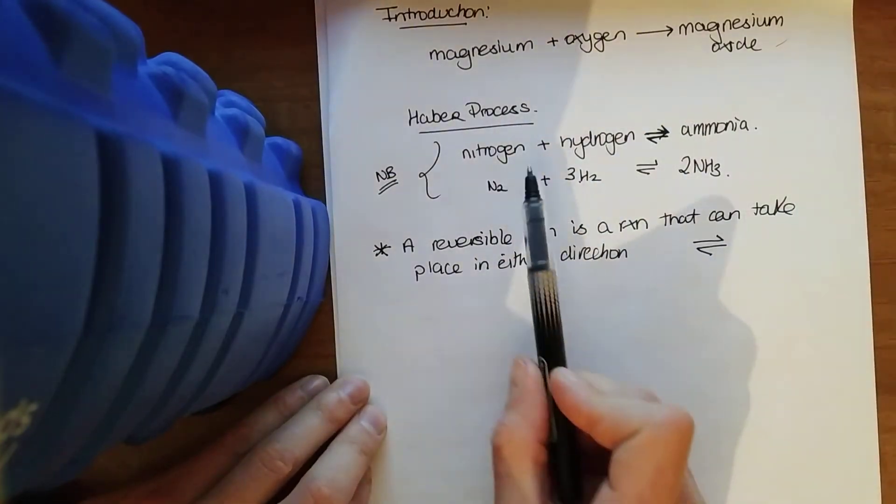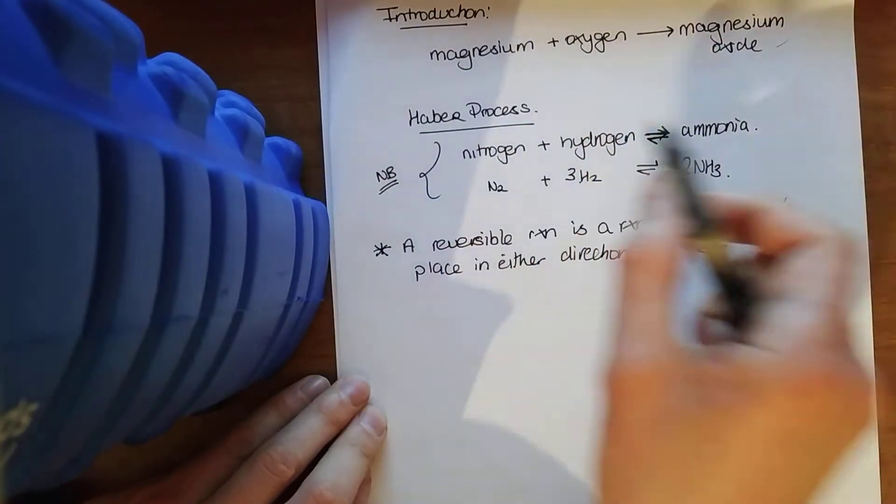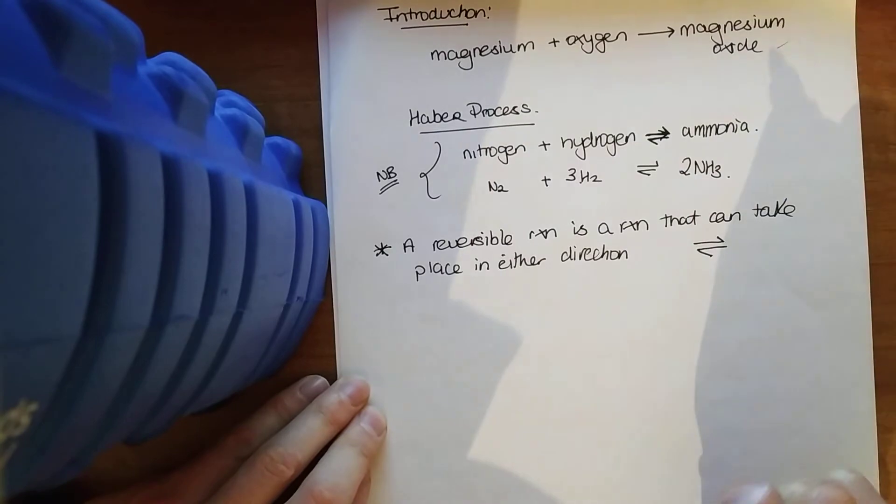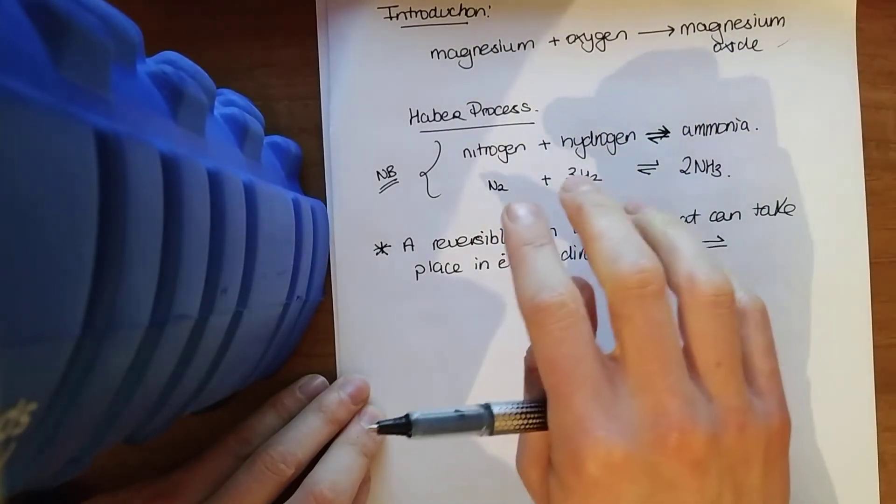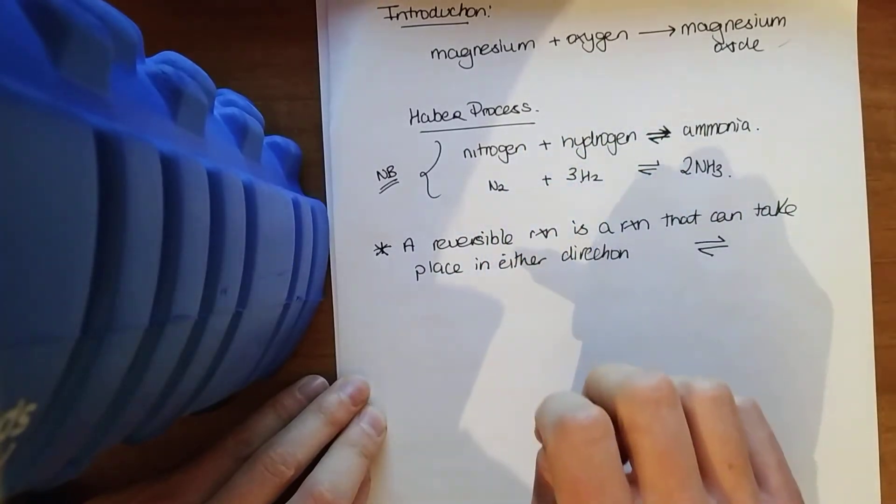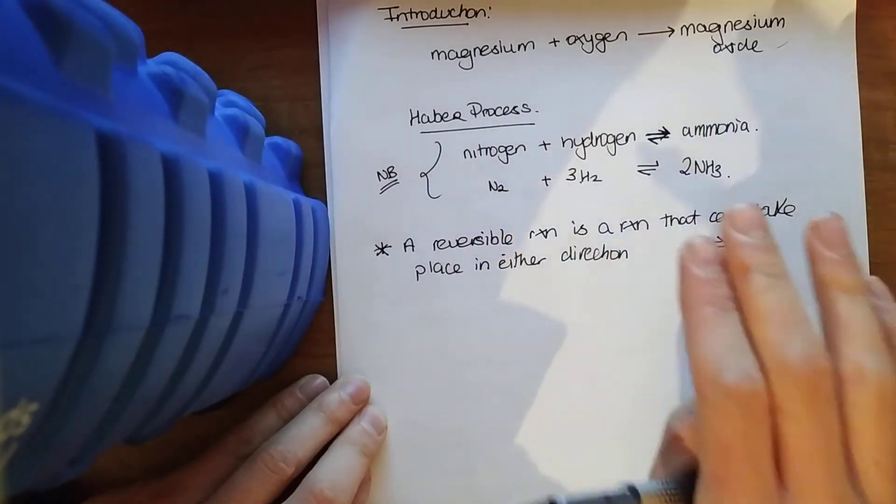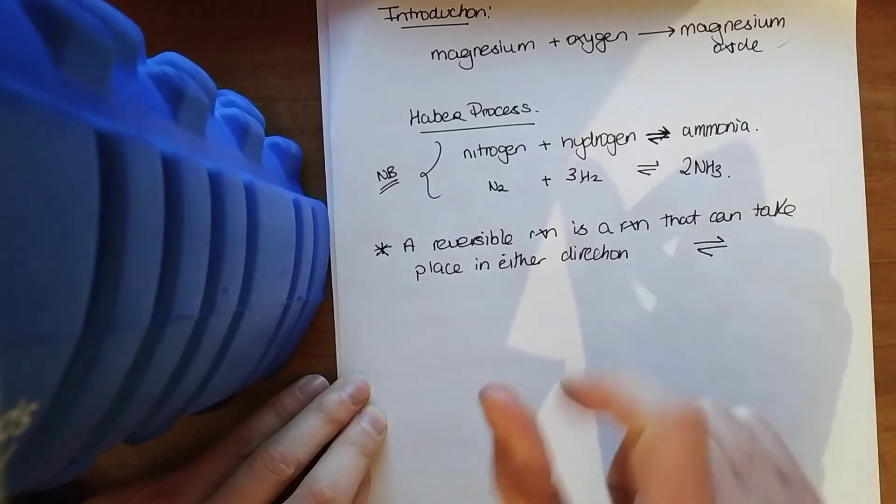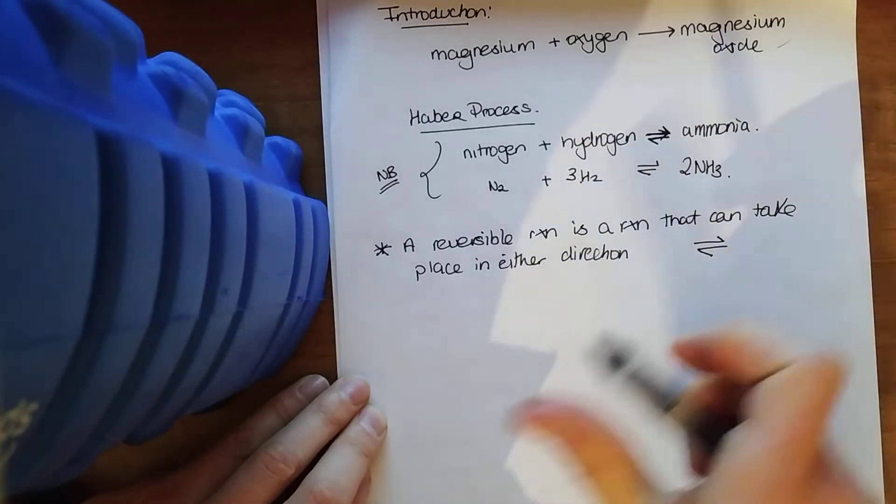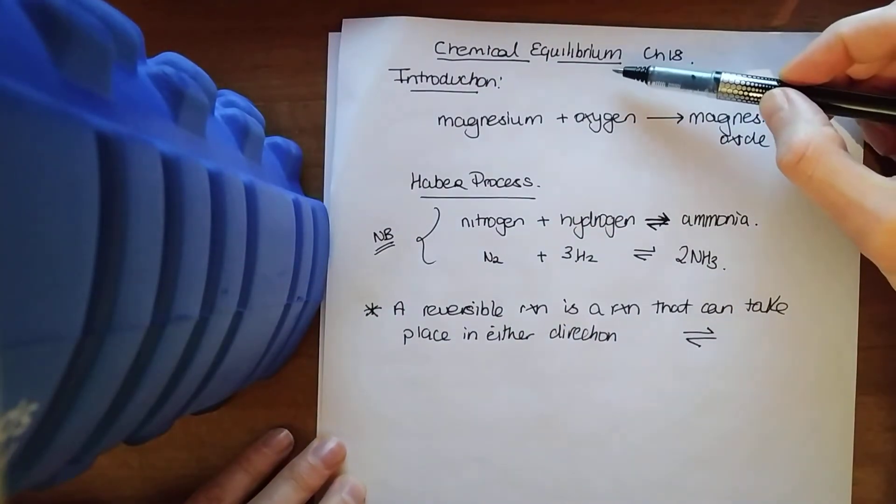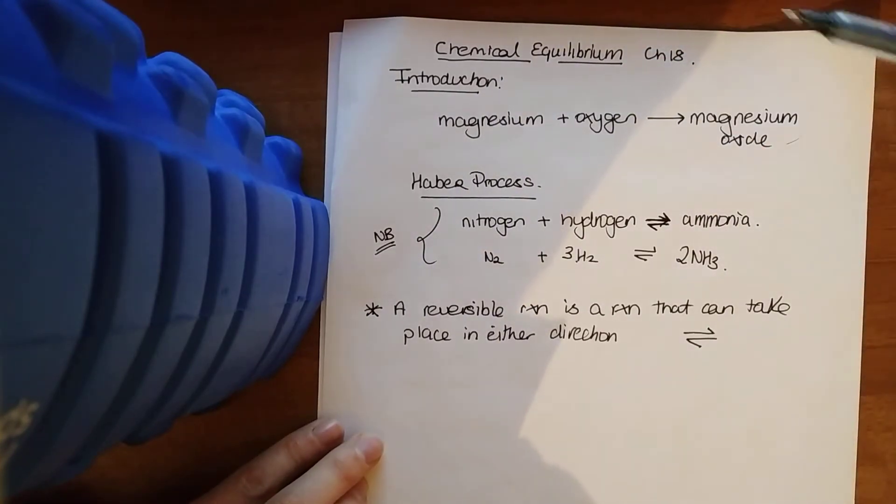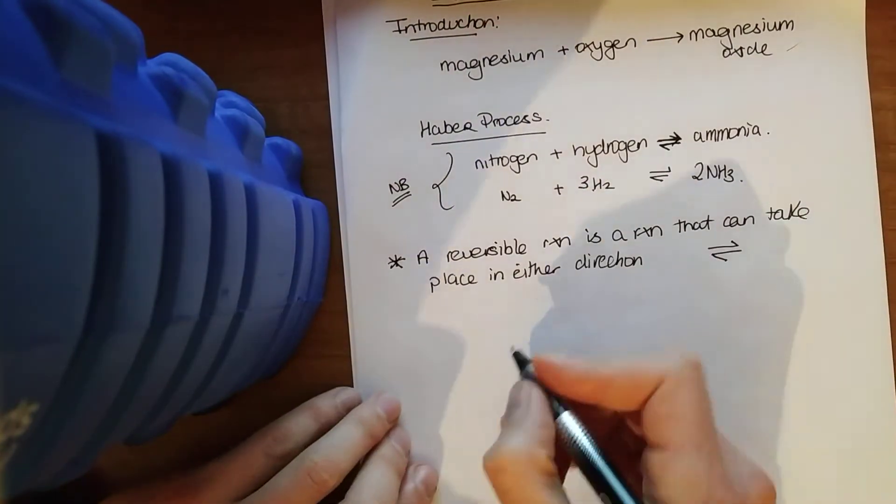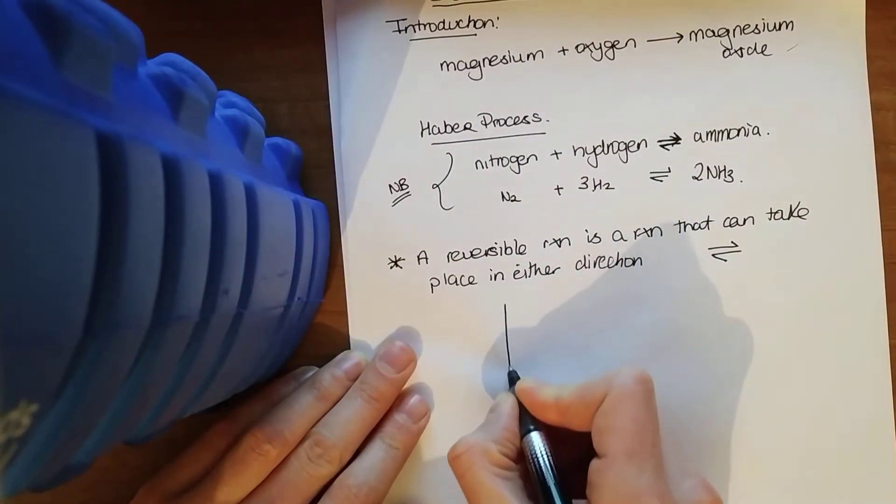Now, our nitrogen and hydrogen are continuously reacting to form ammonia, while our ammonia is continually decomposing to form our nitrogen and hydrogen. And when this state of equilibrium has been reached - equilibrium means balance - the rate of the forward reaction is equal to the rate of the reverse reaction. There's no change in the overall amounts.